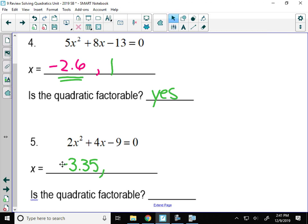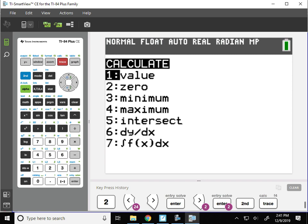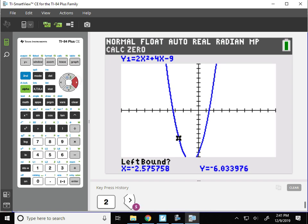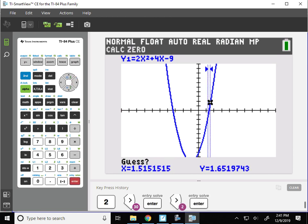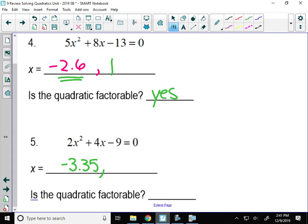And then one more. Do that again, second trace, number 2. This time our left bound is a little bit below the axis. So enter, go above. And 1.35. But again, we rounded both of those numbers.